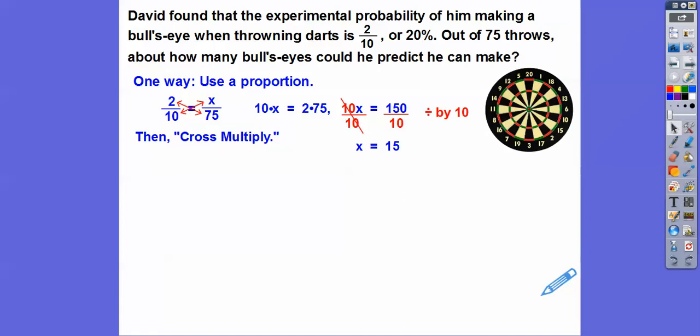But if they give you it as a percent, then all you've got to do is find 20% of 75. So remember, 20%, we have to move that decimal over two places, so it becomes 0.20. And of, in math, means multiply. So 0.20 times 75, and if I multiply that, we get 15.